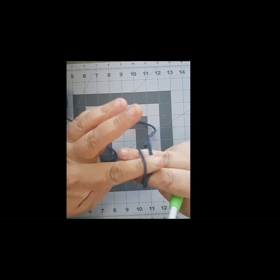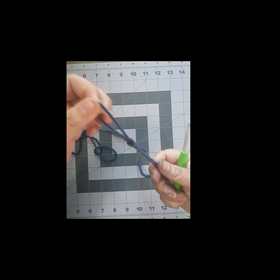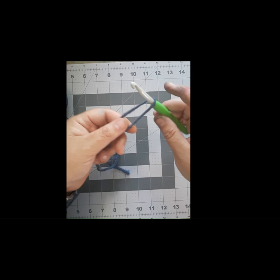You're going to take the loose piece and you're going to take your finger and you're going to pull that piece underneath the bottom. Flip it over, grab both pieces and pull. And you have made a slip knot.